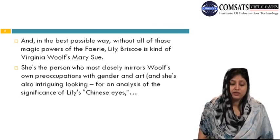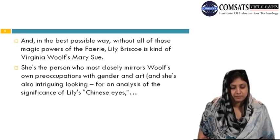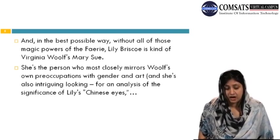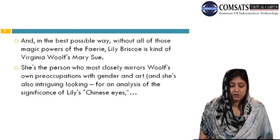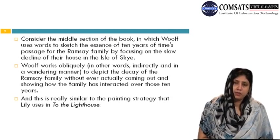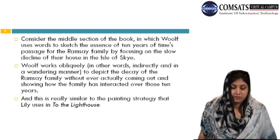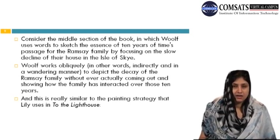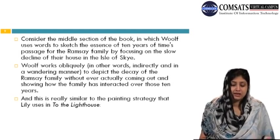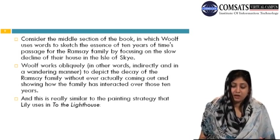In the best possible way, without all the magic powers, Lily Briscoe is a kind of Virginia Woolf's Mary Sue — the person who most closely mirrors Woolf's own preoccupations with gender as well as art. Consider the middle section of the book where Woolf uses words to sketch the essence of ten years' passage for the Ramseys by focusing on the slow decline of their house on the Isle of Skye. Woolf works indirectly, in a wandering manner, to depict the decay of the Ramsey family without directly showing how the family has interacted over those ten years.